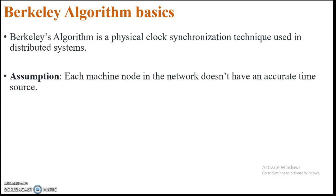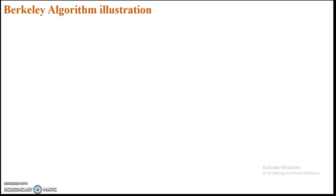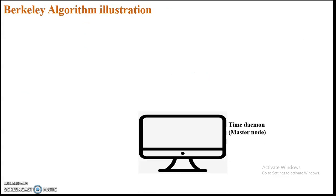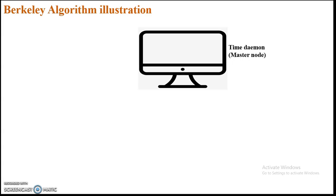Each geographical location will have different times, and these times will be reflected on the computers. That is why it is said that each machine node in the network does not have an accurate time source. We will first look at an example of Berkeley's algorithm, and then go to the formal algorithm — it makes it easier to understand if we see the illustration first.